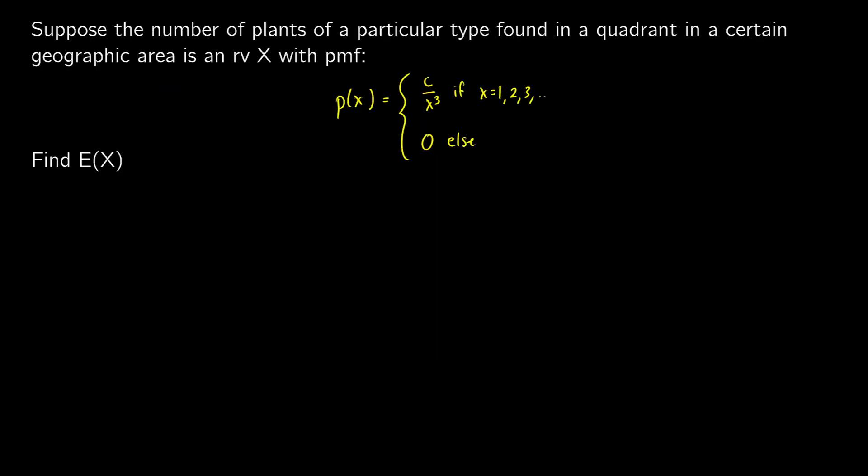So let's take a look at a more complicated problem. Suppose the number of plants of a particular type found in a quadrant in a certain geographic area is a random variable x with the following PMF. It's c over x cubed if x is equal to 1, 2, 3, 4, so on, and it's 0 otherwise.